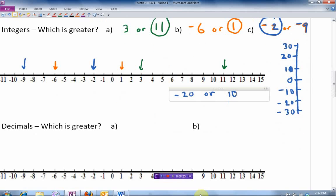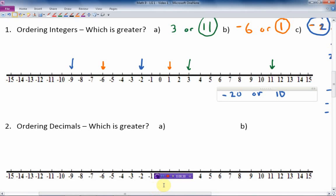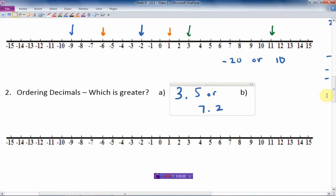Okay, so moving on to decimals. Which is greater? Let's just choose a couple of examples here. If I chose the example, let's just do 3.5 or 7.2. Well, let's take a look here. 3.5 is right here. 7.2 is somewhere around there. Which is greater? Well, which one is to the right? 7.2 is to the right. Therefore, it is greater.